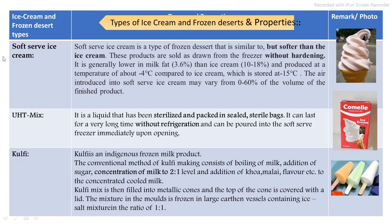Soft serve ice cream is ice cream that is served without hardening. A number of machines are available in which premixes are prepared from powder and then directly used to prepare soft serve ice cream. Ultra-high-temperature treated mix is ice cream mix in liquid form that can be purchased from the market and used directly. Kulfi is prepared by concentrating milk from 2 to 1% with the addition of other ingredients, after which freezing is carried out. These are the basic main types of ice cream and their parameters.